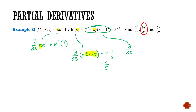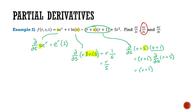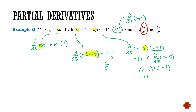Now the derivative of (r + s)(r + 1) with respect to s: my s term is only in the first factor, so (r + 1) can be treated like a constant. This becomes (r + 1) times the derivative of (r + s). The derivative of r is 0, plus the derivative of s is 1, leaving me with r + 1. And the derivative of 5t² with respect to s: there are no s terms in here, so 5t² is treated like a constant, and the derivative of a constant is 0.